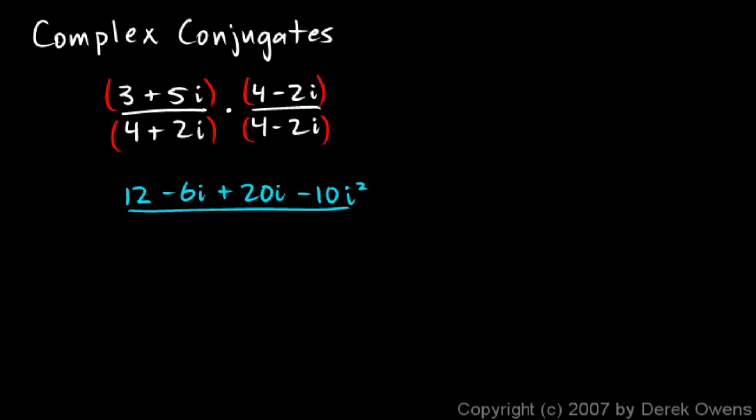Now the denominator. 4 times 4 is 16. And then the outer, I have 4 times minus 2i, that's minus 8i. And then I have 2i times 4, that's plus 8i. And then I have 2i times negative 2i, that's negative 4i squared.